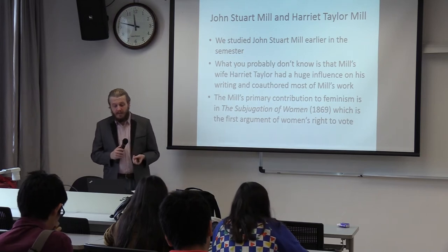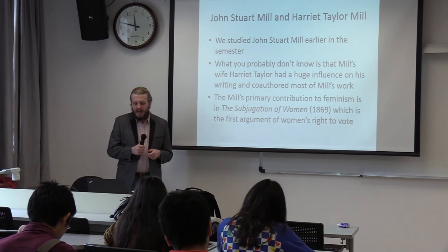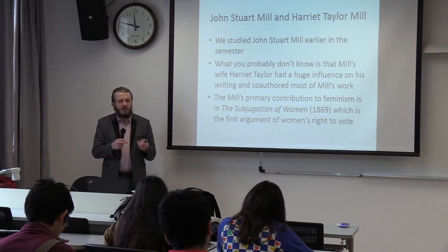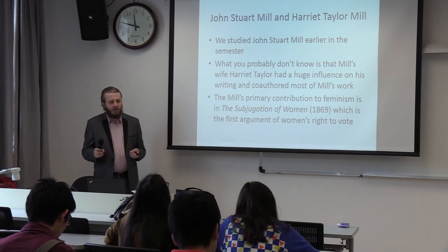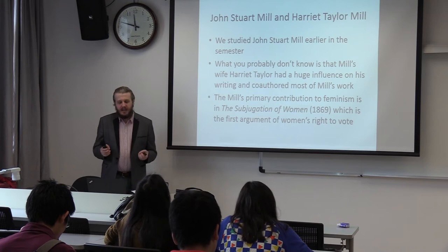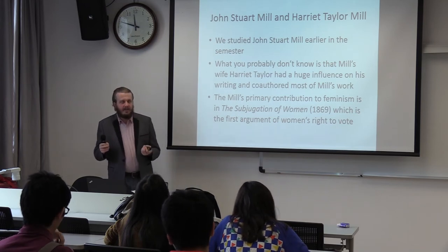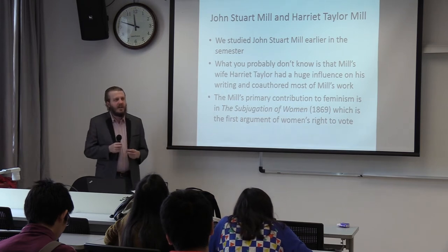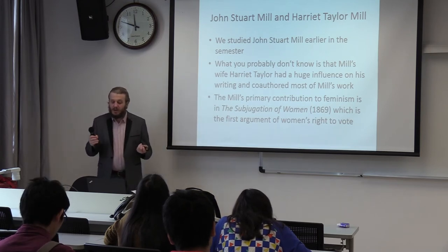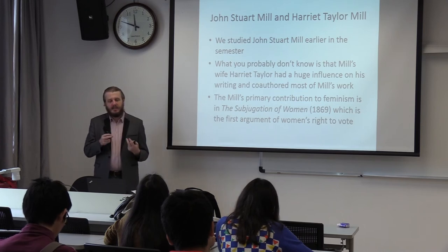The next important liberal feminist is John Stuart Mill, whom we've looked at earlier in the semester. What you didn't know is that his wife, Harriet Taylor Mill, had a big influence on his work — in fact, co-authored most of it with him — and probably never got much credit because there was a huge stigma against women publishing. It wasn't easy for women to go to a publisher and say they'd written something. Most publishers would say no, you're just a woman. So if they were lucky and had a supportive husband, she would publish under his name. One of the things he published along with her is The Subjugation of Women, which was the first argument that women should be able to vote.